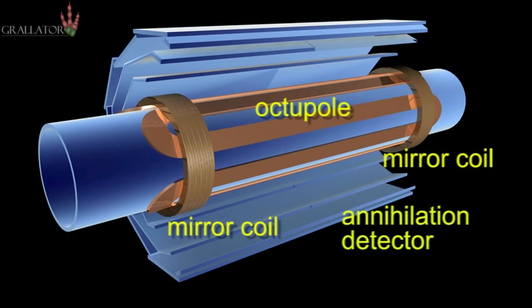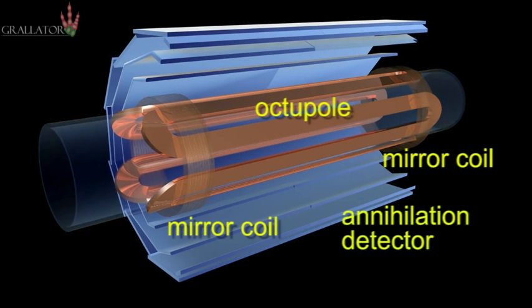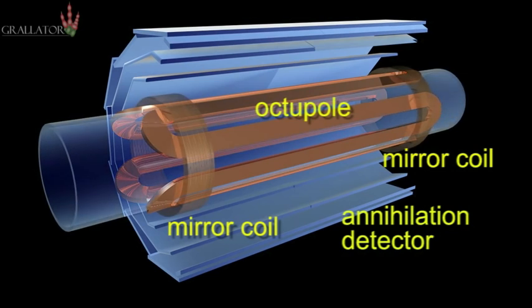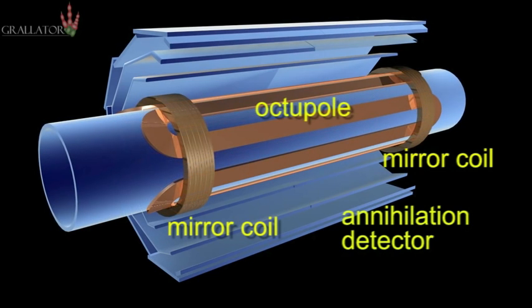Now you see the superconducting magnets that make up the atom trap. There are an octopole and two mirror coils. These are what actually trap the antihydrogen atoms when they're produced. They produce very strong magnetic fields that grow from the center of the apparatus.